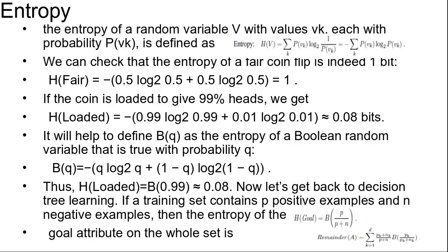We can measure exactly how much by looking at the entropy remaining after the attribute test. An attribute A with d distinct values divides the training set E into subsets E1 to Ed. Each subset EK has pK positive examples and nK negative examples.